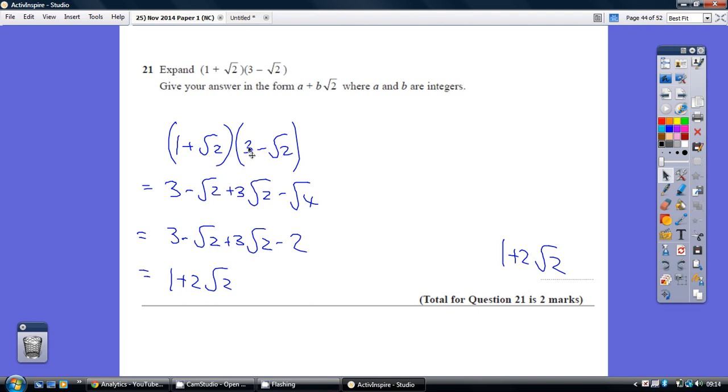So root 2 times 3, or turning it around the other way, is just 3 lots of root 2, 3 root 2, plus root 2 times a minus root 2.